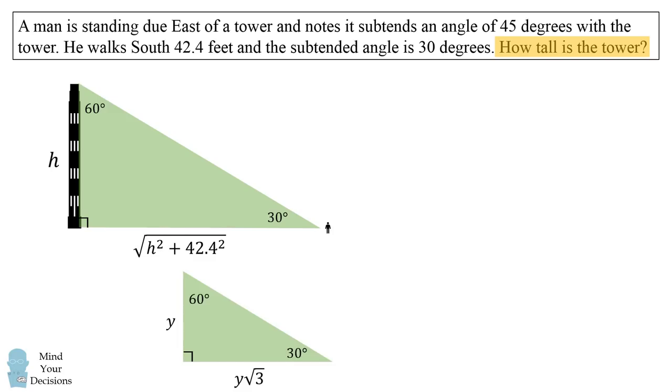Well, we can use the property of the 30-60-90 right triangle that the leg opposite 30 degrees, if that length is y, then the leg opposite 60 degrees is the square root of 3 times that. From our diagram, we end up with the equality that the square root of h squared plus 42.4 squared will be equal to h times the square root of 3.